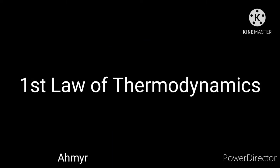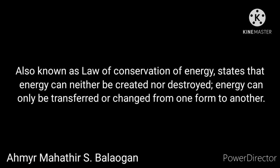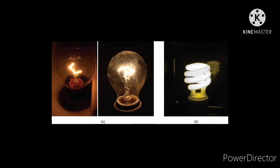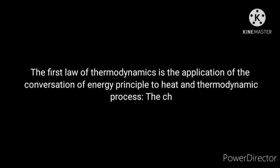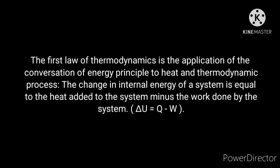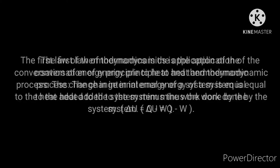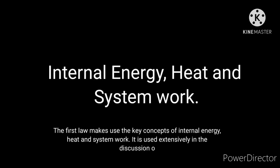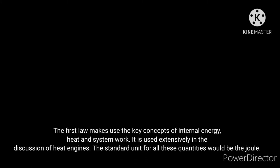The first law of thermodynamics, also known as the law of conservation of energy, states that energy can neither be created nor destroyed. Energy can only be transferred or changed from one form to another. For example, turning on a light would seem to produce energy, but it is electrical energy that is converted. The first law is the application of the conservation of energy principle to heat. In thermodynamics, the change in internal energy of a system is equal to heat added to the system minus the work done by the system: ΔU = Q − W.